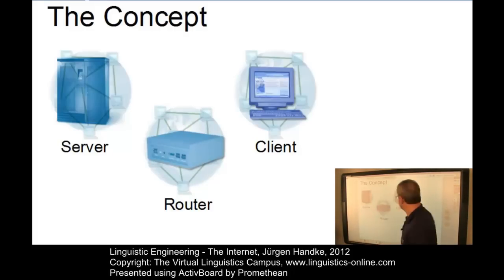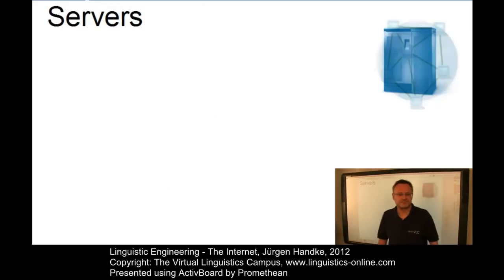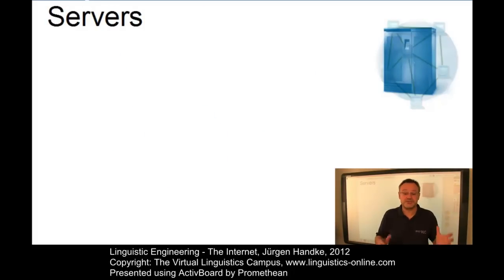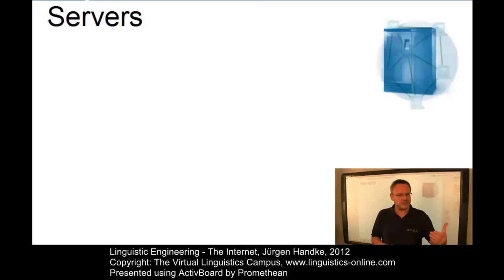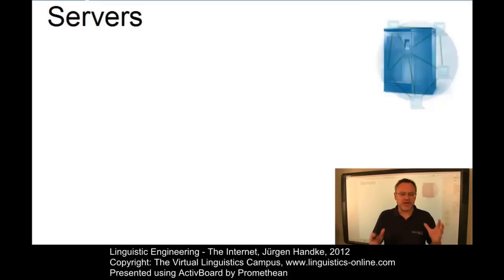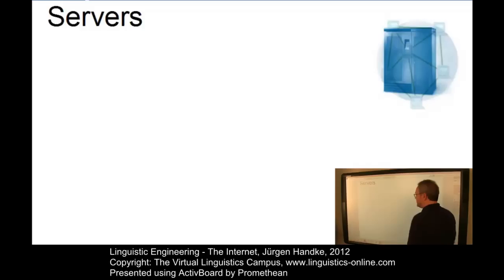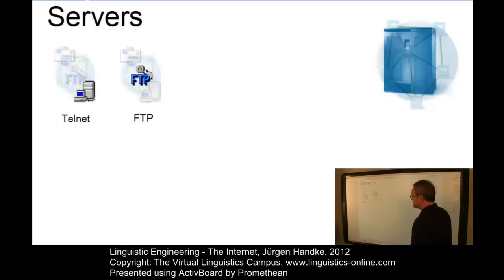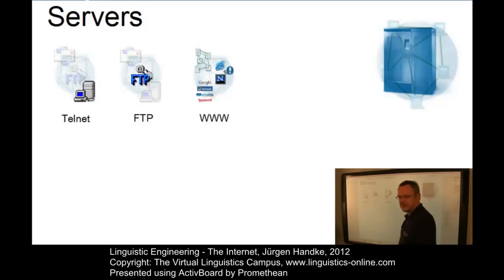The central machines on the Internet, or more precisely the software installed on them, are referred to as servers. The server hardware is not radically different from that of a standard workstation. The software, however, is especially designed to access information of specific types. Depending on the software installed, servers may be subdivided into Telnet servers, FTP servers, or World Wide Web servers.